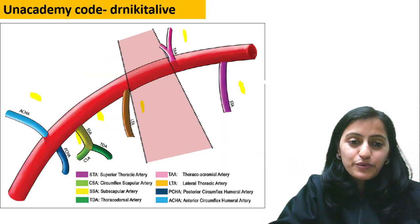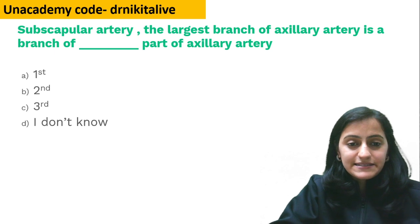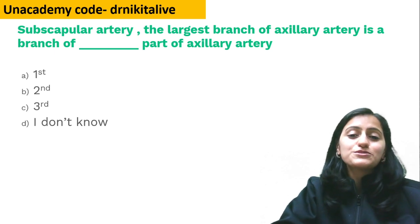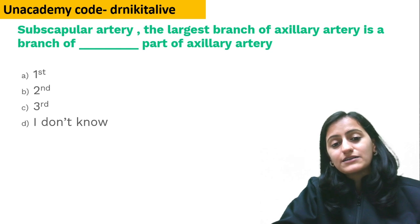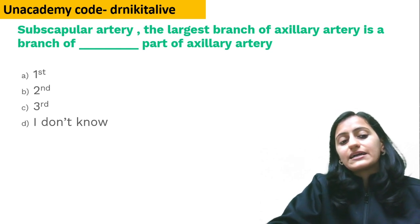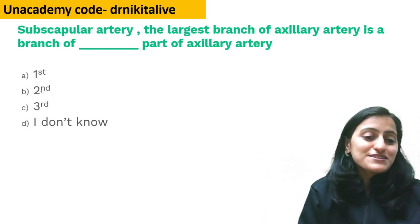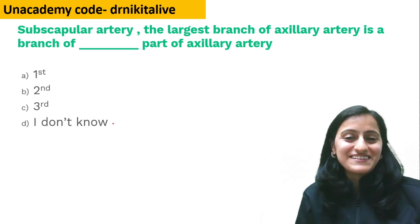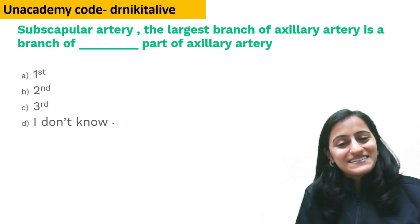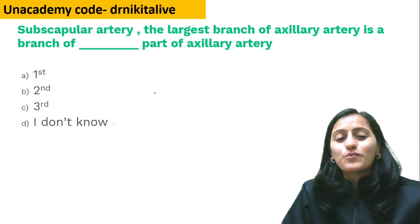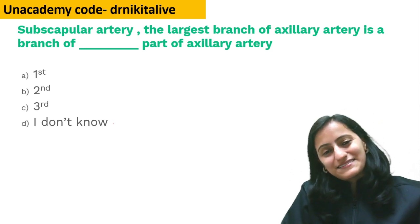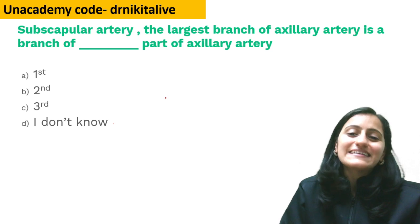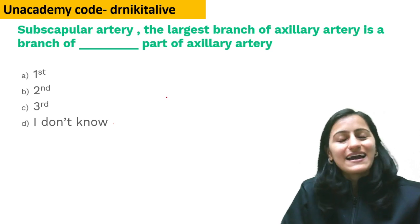Here's a question for quick review: the subscapular artery, which is the largest branch of the axillary artery, is a branch of which part — first, second, or third? Do let me know in the comments. Thank you so much for watching. Keep studying, keep revising, and keep winning.